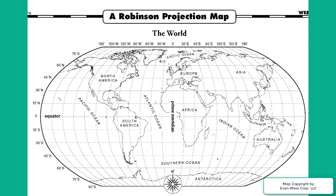It's important to understand that projection maps do have discrepancies, and depending on which projection we're looking at will determine the type of distortion or discrepancy we're going to see.